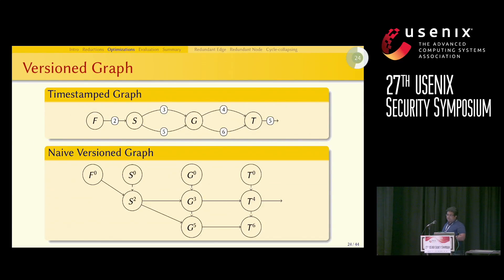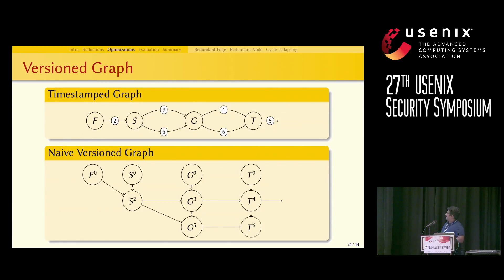Here is a timestamped graph that has been converted to a version graph. A version is created whenever there is an incoming edge to a node. For example, S has a single incoming edge so we create one version; G has two incoming edges so we create two versions for node G, and so on.